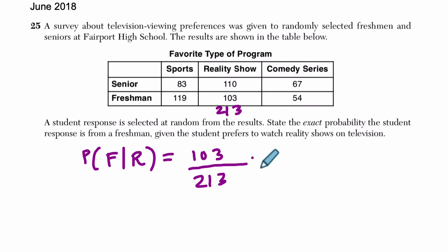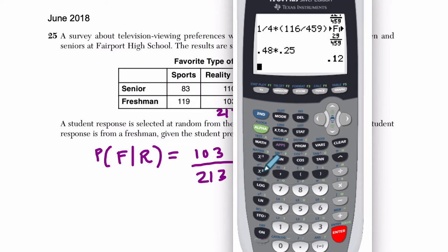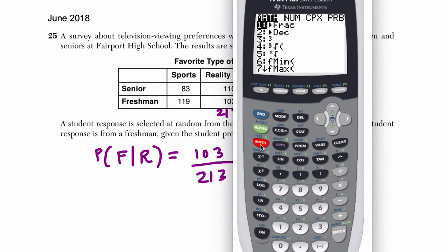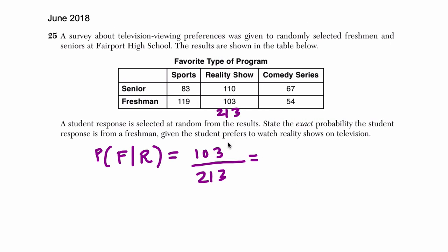Now, when you set up a fraction like this on the calculator, what I recommend is that you just enter it in — enter the fraction — 103 divided by 213, go to math, fraction, and it'll give you the reduced form of the fraction. So right here, it's already been reduced, and we're finished. That's our answer. Just cross it out, and we're done.